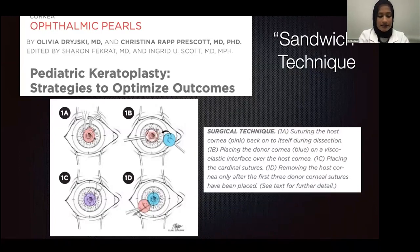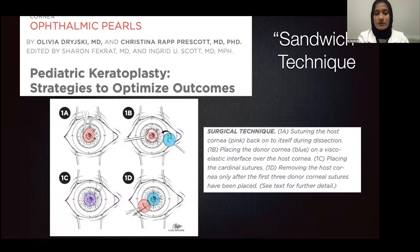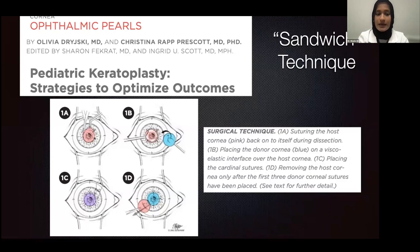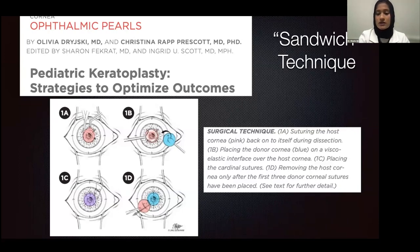Looking at the surgical technique for penetrating keratoplasty in a neonatal patient, there is an excellent review of the sandwich technique. For pediatric patients, usually within the first few years of life, what you typically want to do is remove a quadrant of the patient's host cornea and suture it back on itself. Once you completely remove and suture the host cornea back to itself, you place the donor cornea on top, suture it in a completely different quadrant at 12 o'clock, 6 o'clock, and 9 o'clock, and then slip out the host tissue. This really prevents iris prolapse, lens extrusion, and the difficulties of high posterior pressure for pediatric patients.